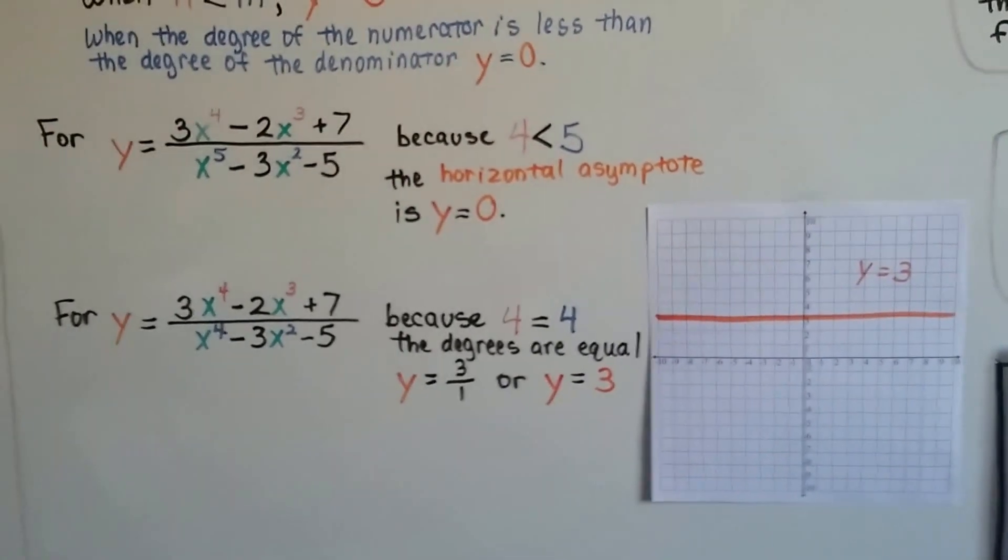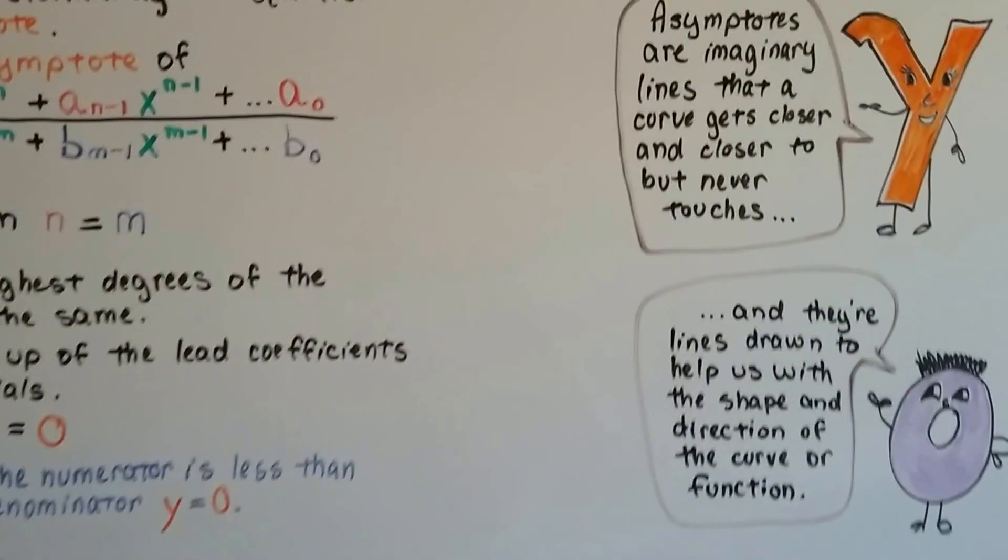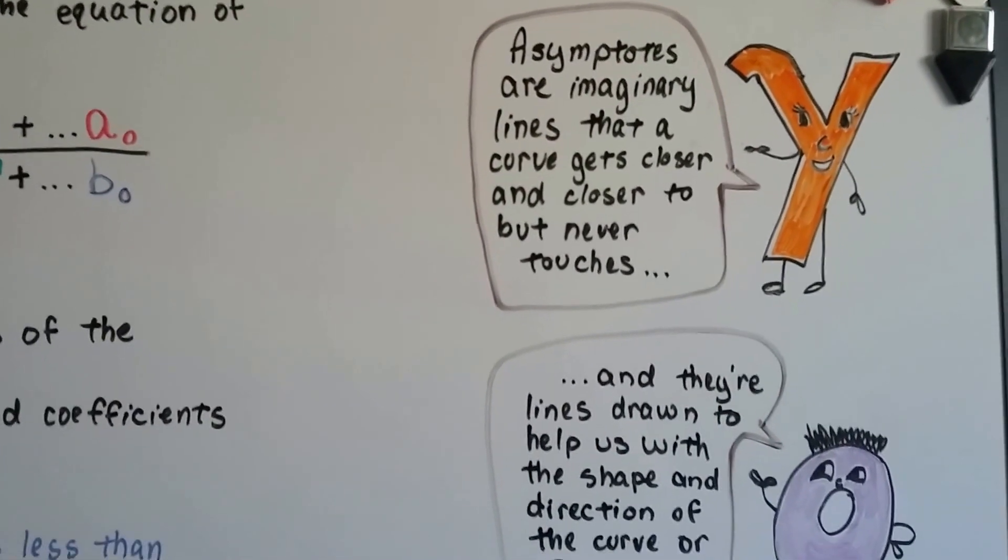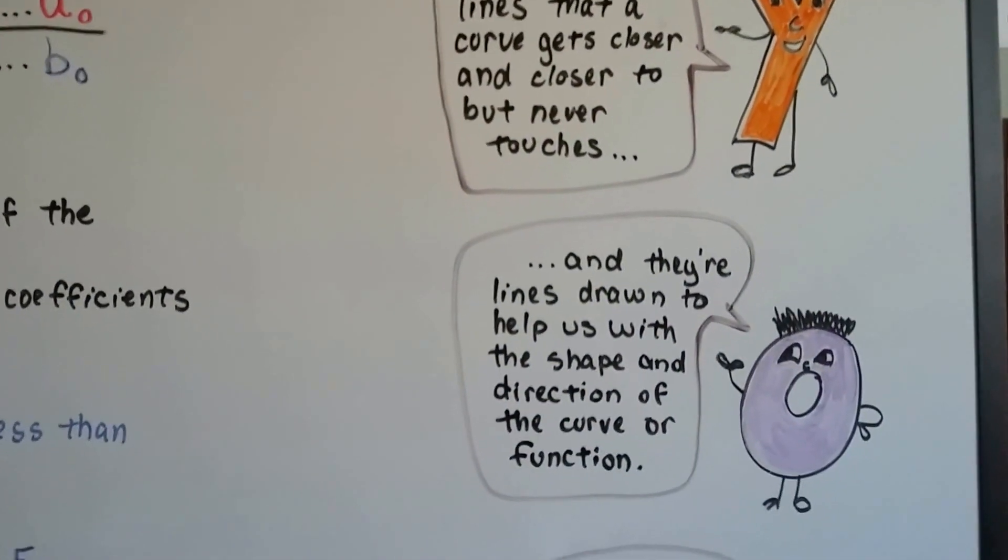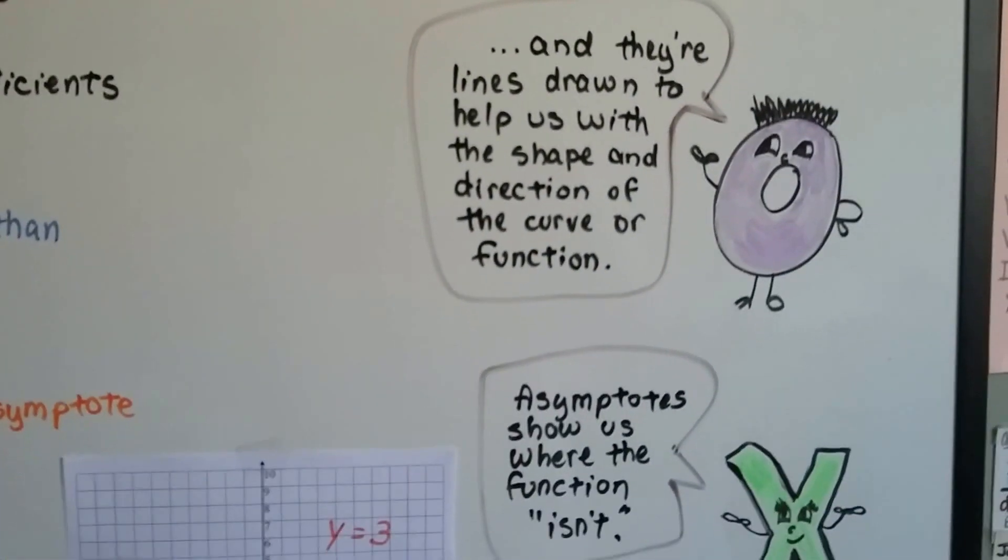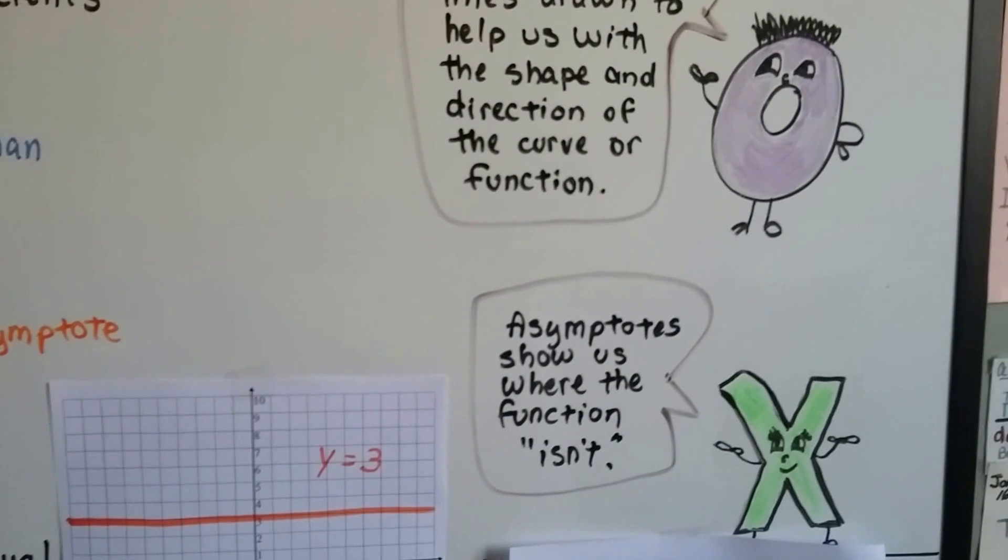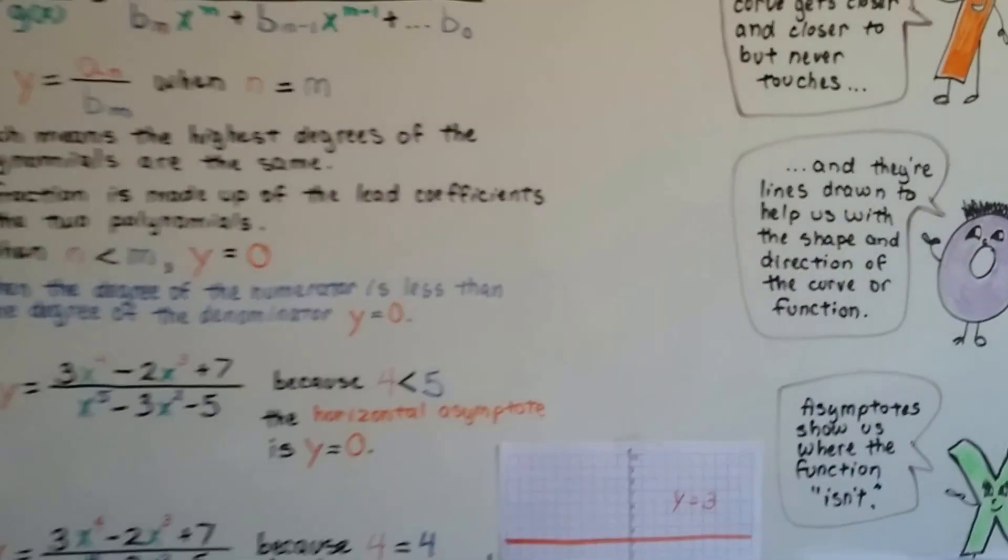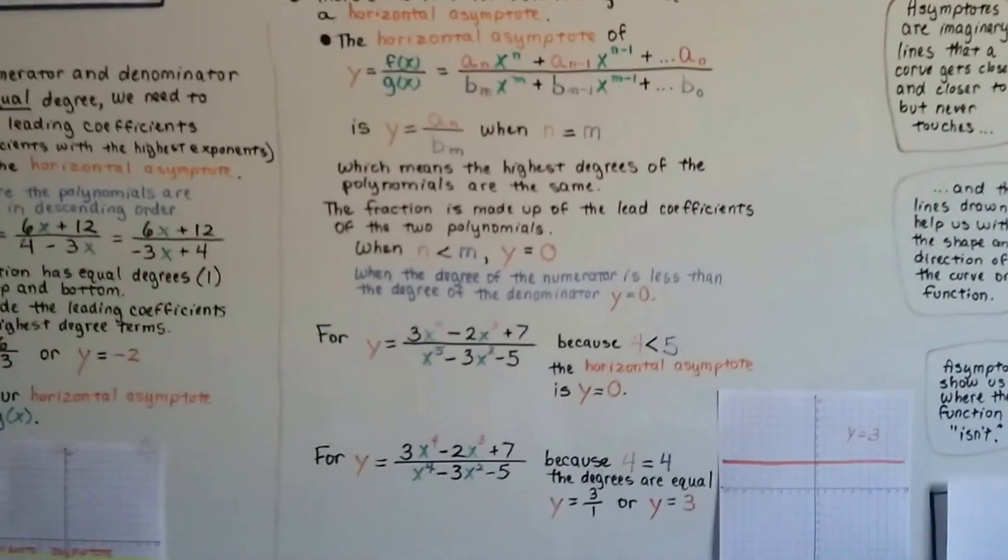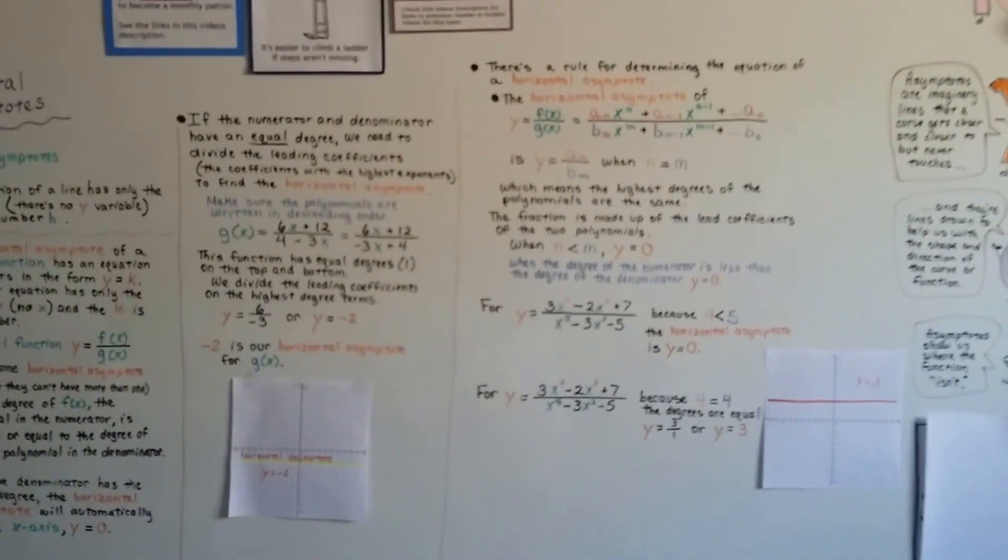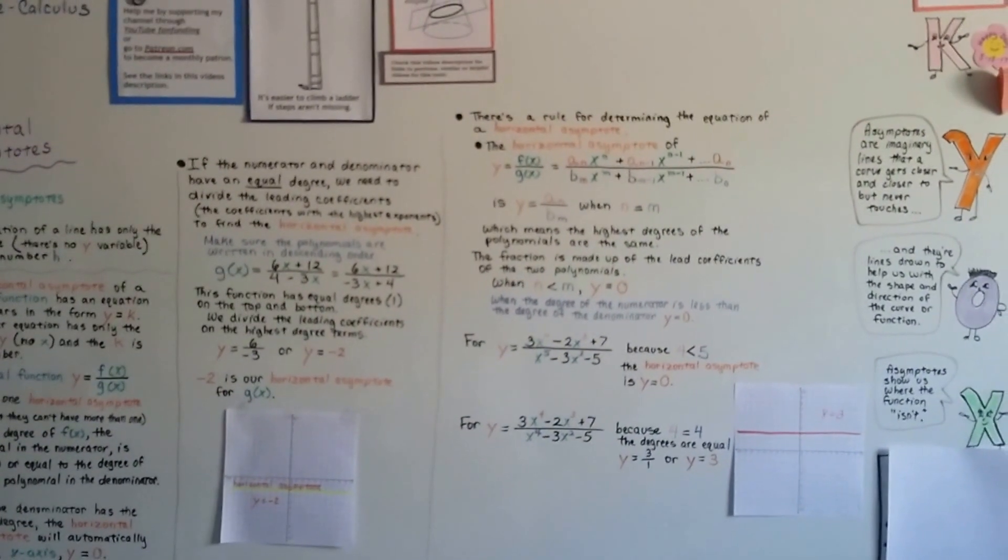Does that make sense? Remember, asymptotes are just imaginary lines that a curve gets closer and closer to, but never touches. And they're lines drawn to help us with the shape and direction of the curve or function, and they show us where the function isn't. I'm going to talk about oblique asymptotes in the next video, and I hope this was helpful. I hope you're doing okay, and I hope I'll see you there. Bye.